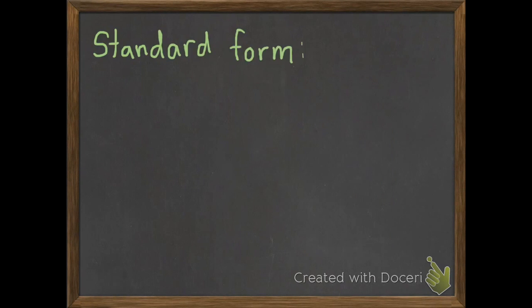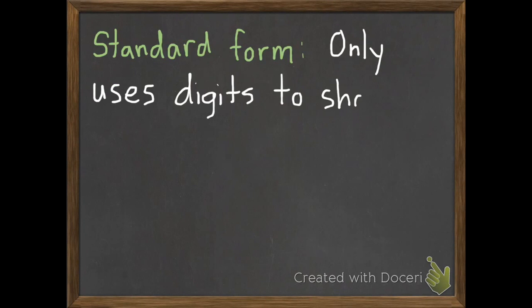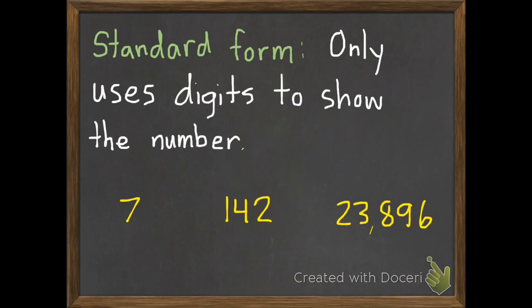Our second vocabulary word is standard form. Standard form is when you only use digits to show a number. Here are some examples of standard form. It's called standard form because it's standard, you could say normal, how you normally see numbers.